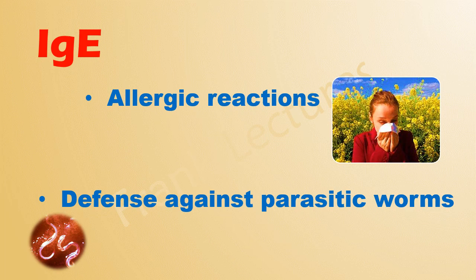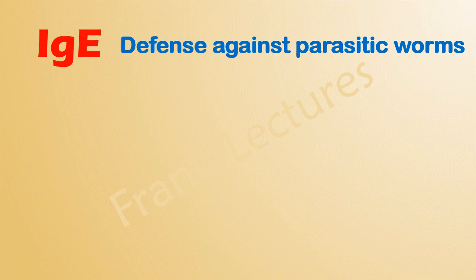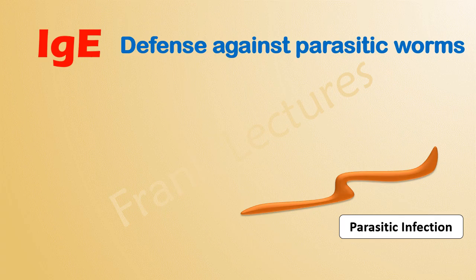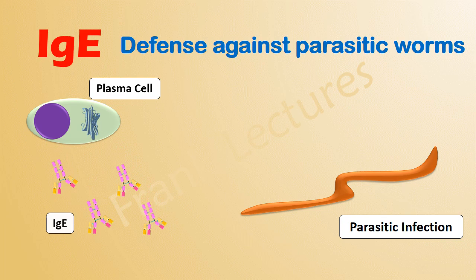Let's discuss the role of immunoglobulin E in our body. First, let us discuss the role of IgE in defense against parasitic worms. When there is an invasion by parasitic worms, the T helper cells secrete cytokines such as interleukin-4, which stimulate B cells to secrete IgE antibodies. The concentration of IgE antibodies in the serum rises.